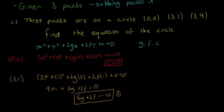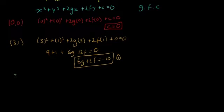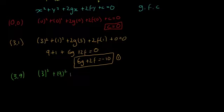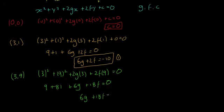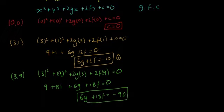Next, we sub in (3, 9) — 3 everywhere there's an x, 9 everywhere there's a y: 3² + 9² + 2g(3) + 2f(9) = 0. That gives us 9 + 81 + 6g + 18f = 0, so 6g + 18f = −90. We'll box that as Equation 2.